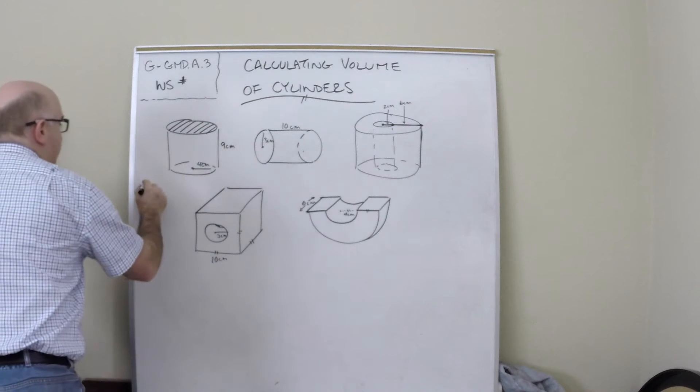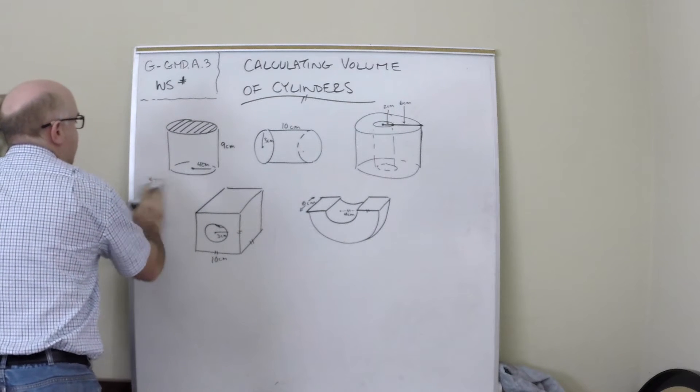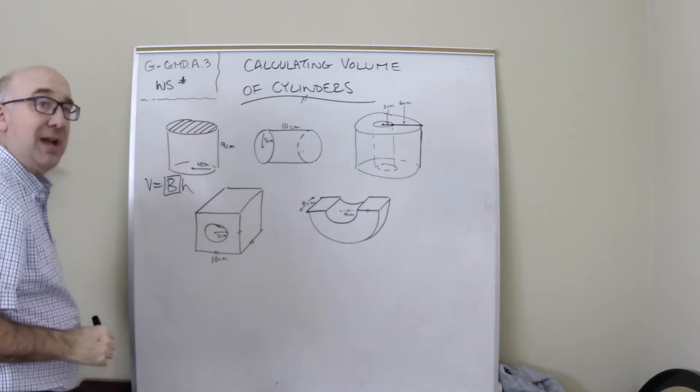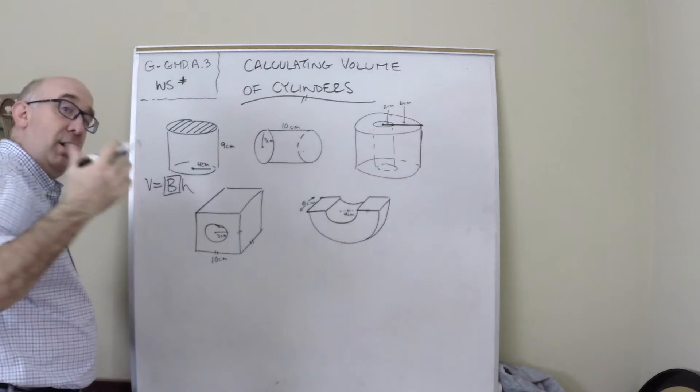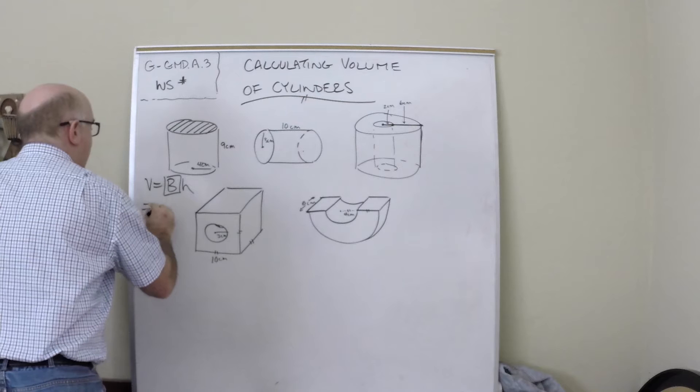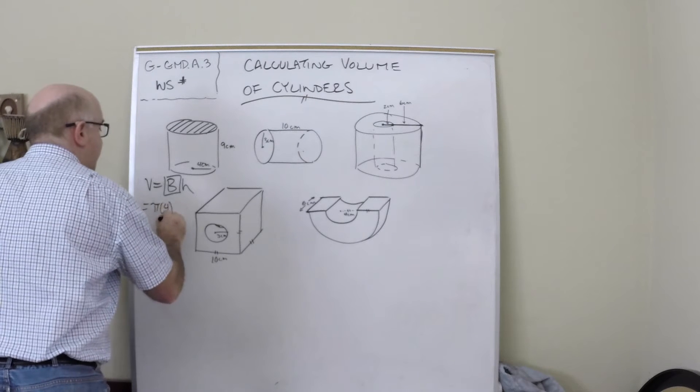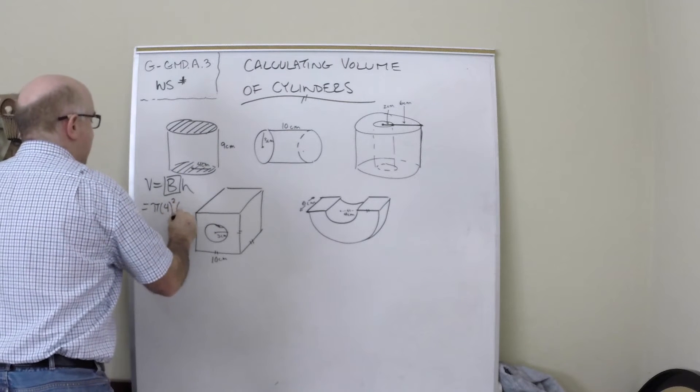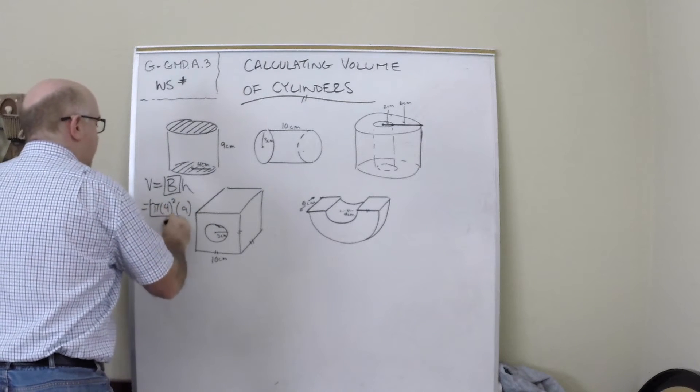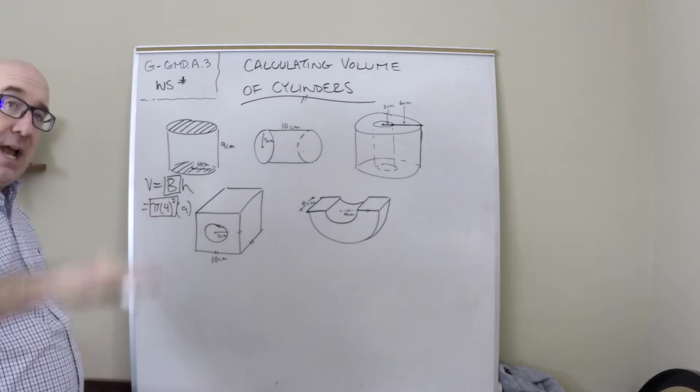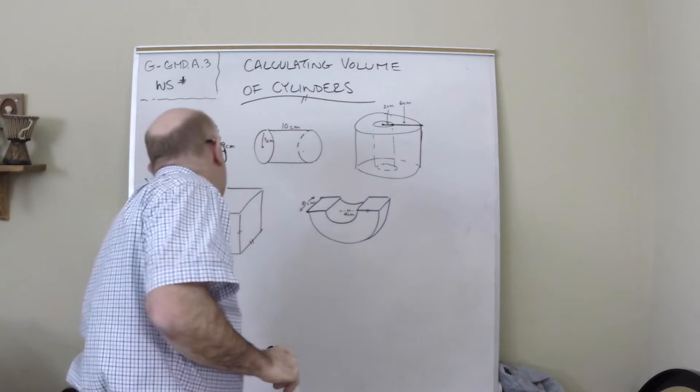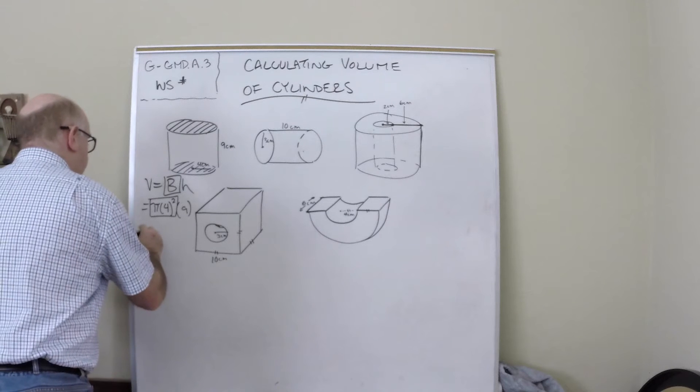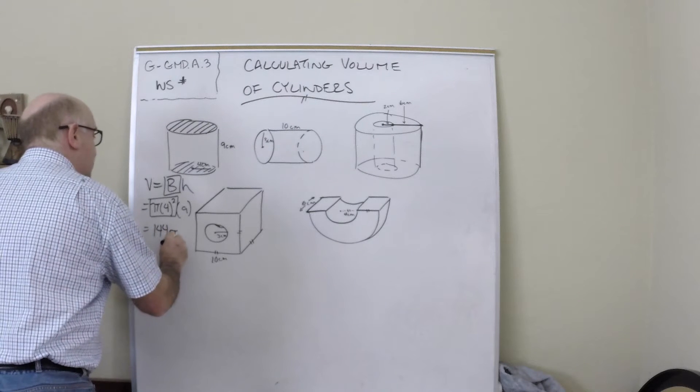So this would be π... well actually let's start more basic. Volume is base times height. See how that matches up with our cylinder and our prism. The base is a circle, πr², and then the height is 9. So this part is the base and then the 9 is the actual height. We get 16 times 9, which is 144π centimeters cubed.